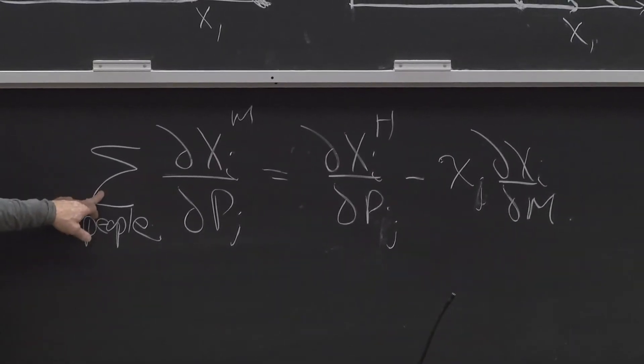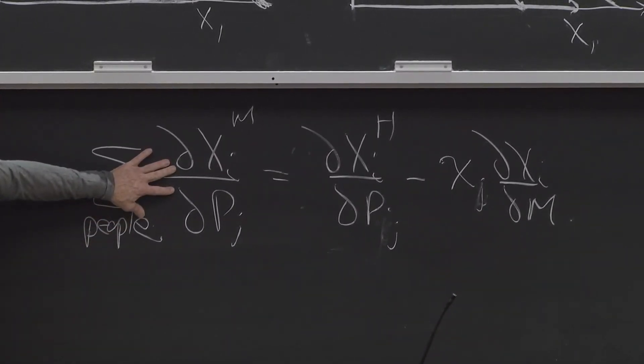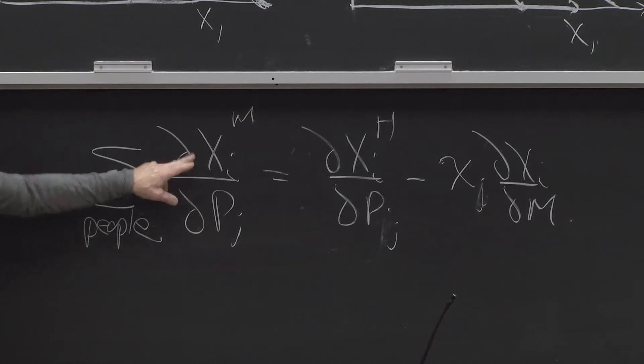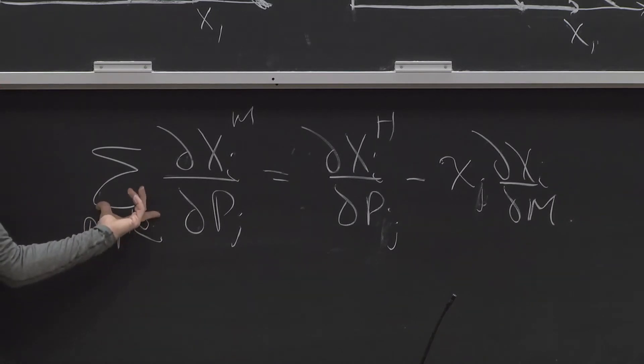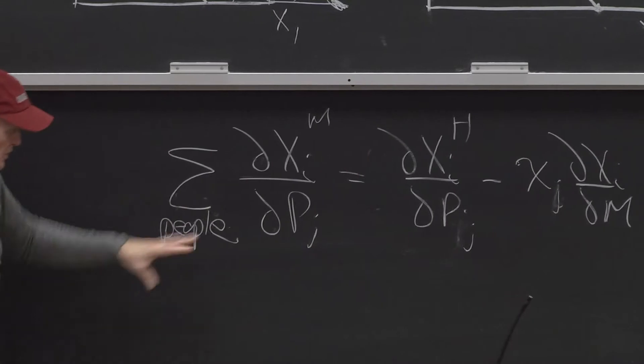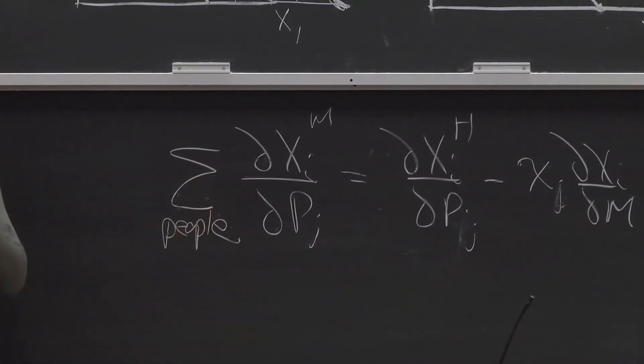The sum over people of these are the Marshallian effects. You can add up the Marshallian effects for people. When the price went up, I bought two units less, you bought three units less, you bought five units less. We just add all them together. That aggregates in a very natural way. This is the total actual quantity reduction.